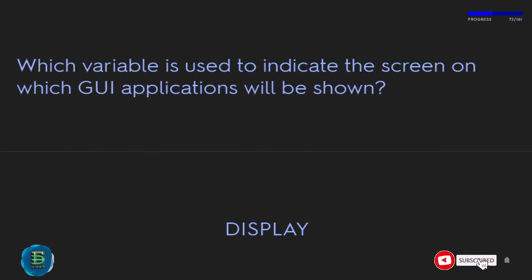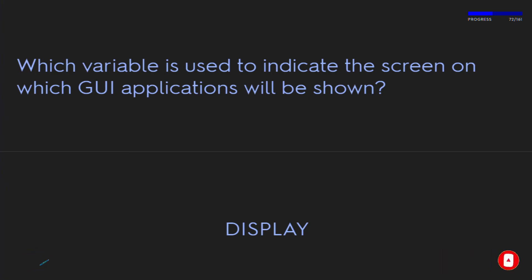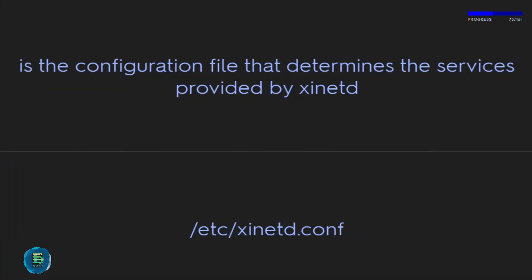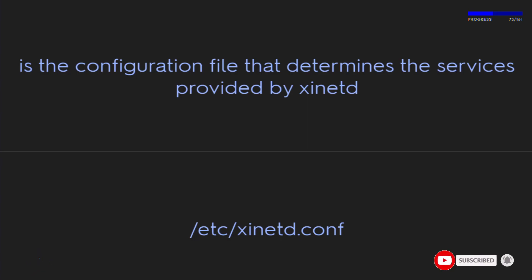Which variable is used to indicate the screen on which GUI applications will be shown? The DISPLAY variable. The configuration file that determines the services provided by xinetd is /etc/xinetd.conf.